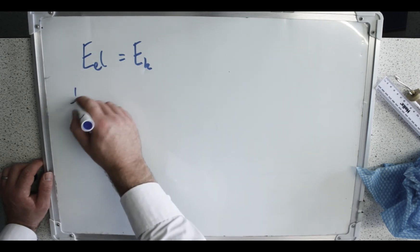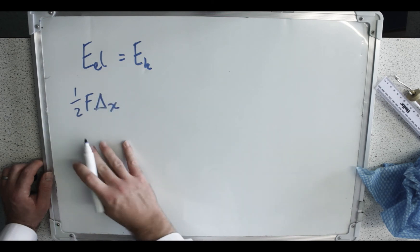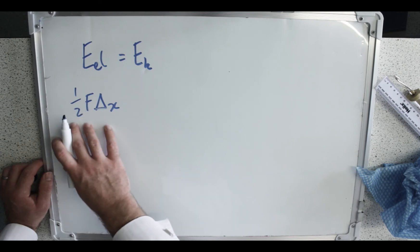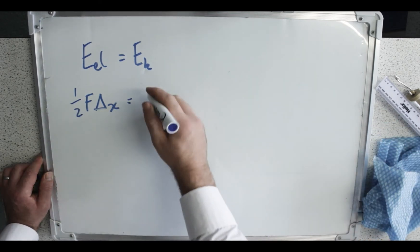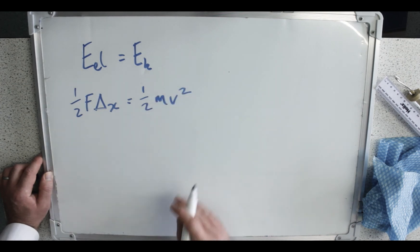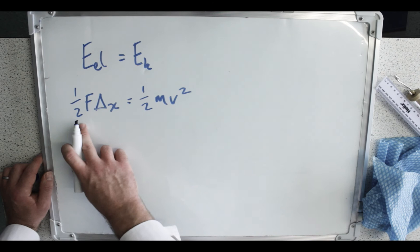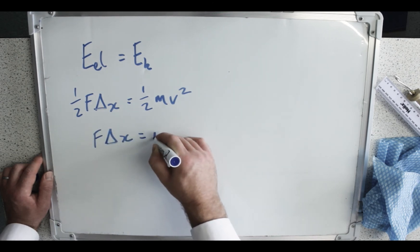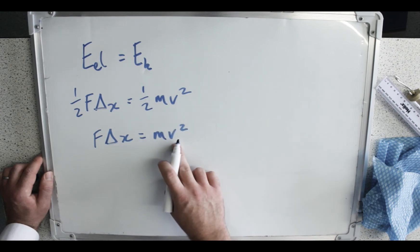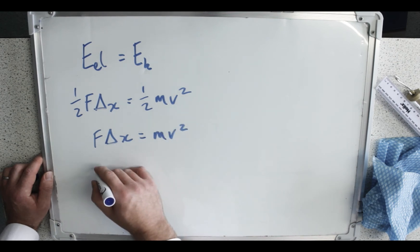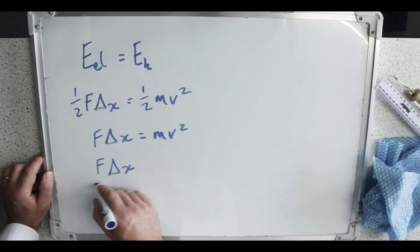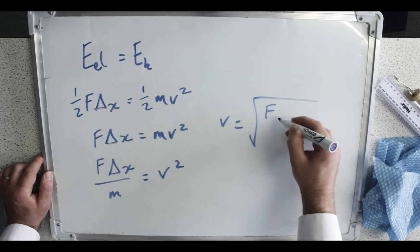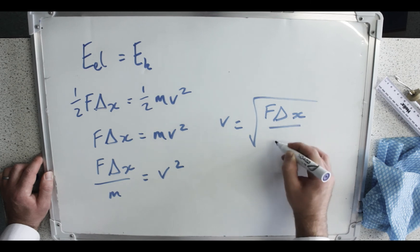So if we know the formula for this is a half F delta x, so this is the elastic strain energy force times by the extension, but halved because this is an average force, is equal to a half mv squared, then we can very quickly do, we can times both sides by 2, so I have F delta x is equal to mv squared, and then rearrange for v. I can just straight away do F delta x over m is v squared, so v is the root of F delta x over m.